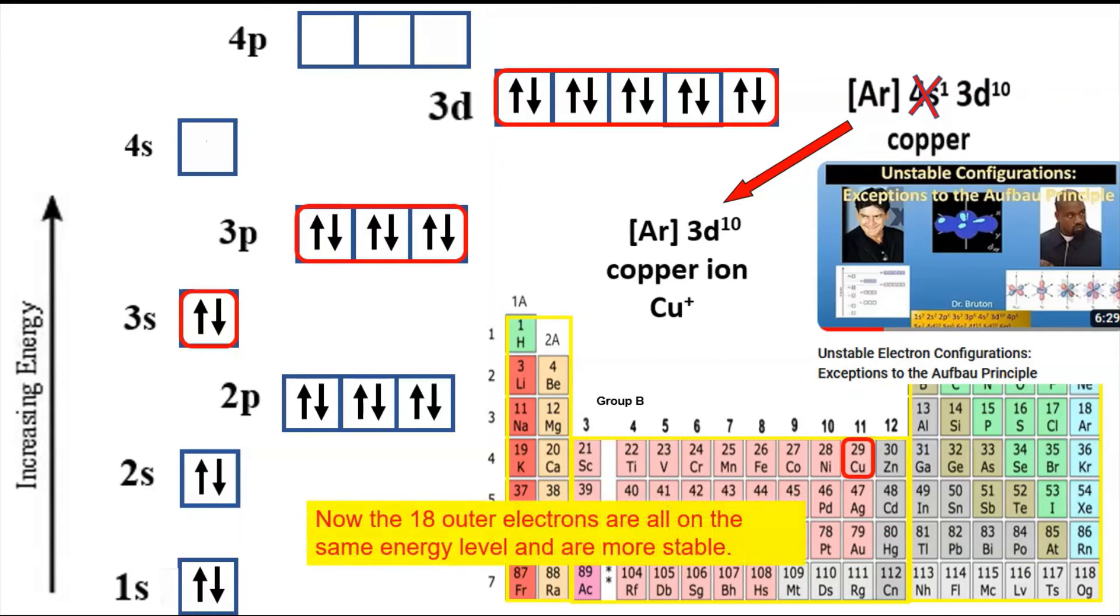Now the 18 outer electrons are all in the same energy level and more stable. It's also of note that any of the atoms below copper are able to have a pseudo noble gas configuration, and of course any of the atoms below zinc are also able to have a pseudo noble gas configuration.